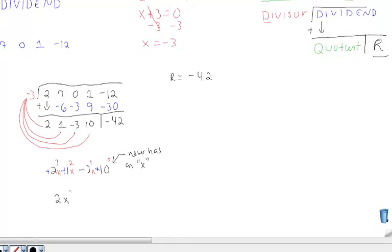2x to the power of 3 plus 1x squared minus 3x plus 10. And that is our quotient, or known as our Q(x). Q(x) is equal to 2x to the power of 3 plus x squared minus 3x plus 10.